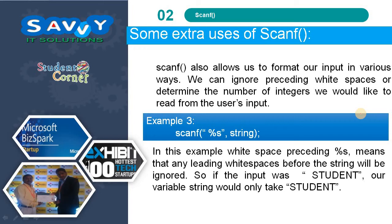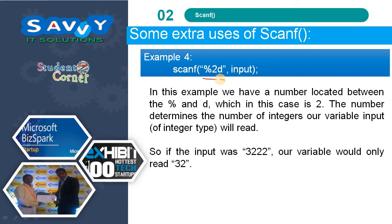Scanf also allows us to format input in various ways. We can ignore preceding white spaces or determine the number of integers to read. For example, scanf(" %s") — the white space before %s means any leading white spaces will be ignored, so input 'student' would store only 'student'. Also, scanf("%2d") with a number between % and d limits the digits read; if input is 3222, the variable reads only 32.